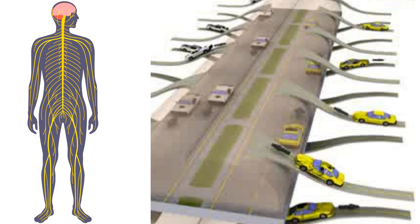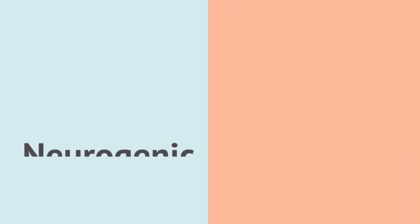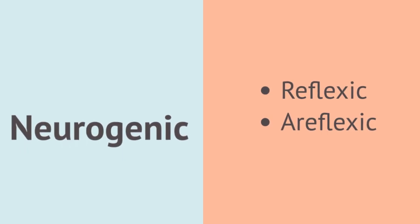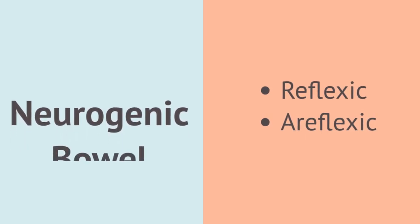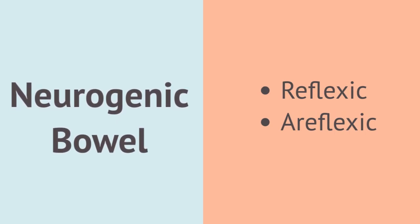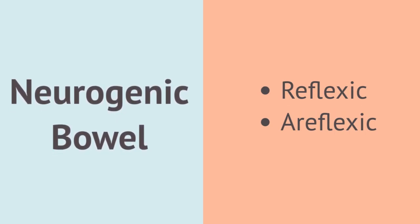When a spinal cord injury occurs, it's like having a roadblock and the messages cannot get through. There are two different types of neurogenic bowel dysfunction after spinal cord injury. Reflexic or spastic bowel occurs in patients with a spinal cord injury above thoracic level 12, also known as an upper motor neuron injury. Areflexic or flaccid bowel occurs in patients with a spinal cord injury at or below thoracic level 12, also known as a lower motor neuron injury.